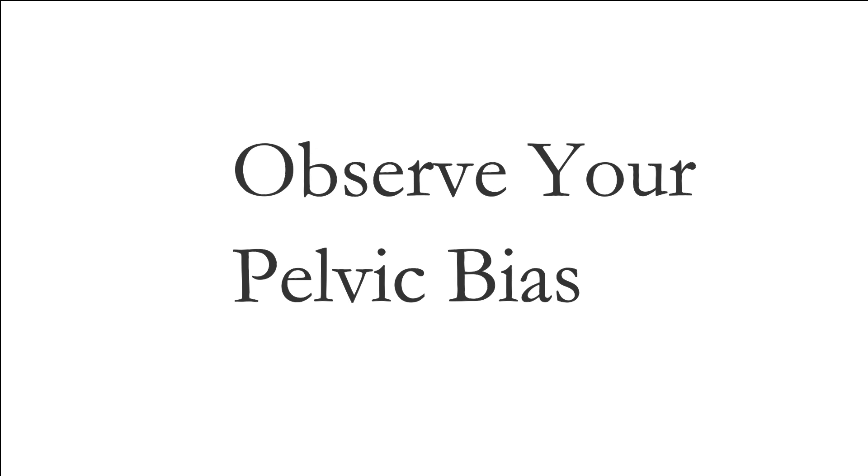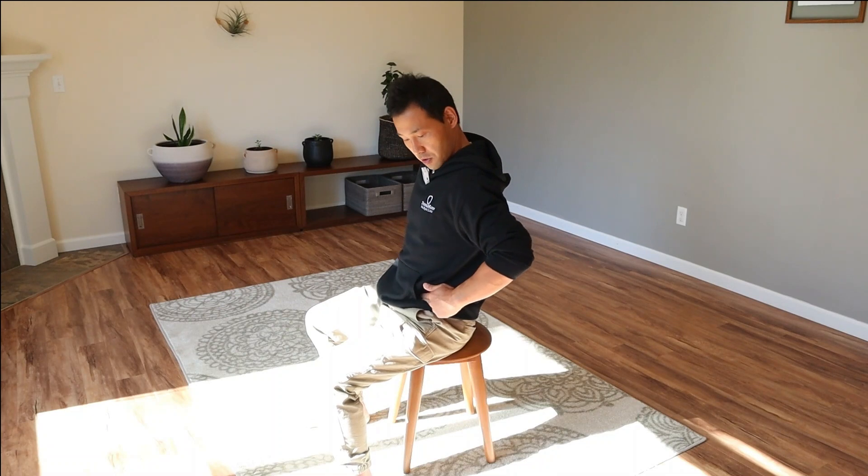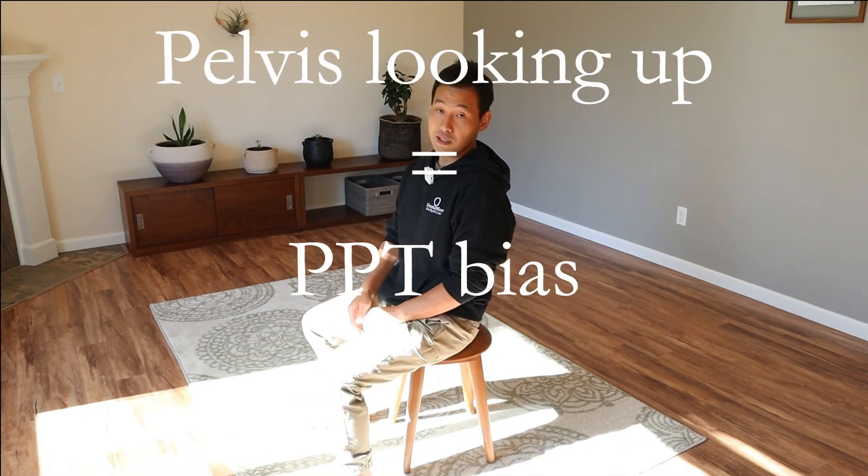Just like you did with anterior pelvic tilt, check your pelvis position in sitting and standing. In sitting, place your fingers on the front bony parts of your pelvis. Sit how you normally sit — don't change your posture — because you want to see your natural habitual movement patterns. Imagine the eyes on the front of the pelvis: if those eyes are looking upward instead of downward, that is a posterior pelvic tilt.